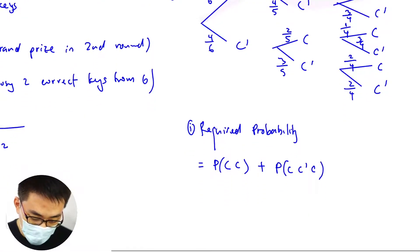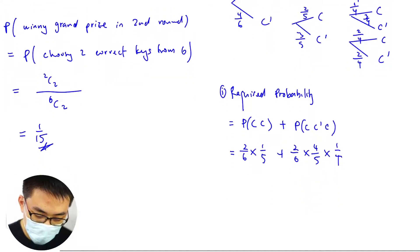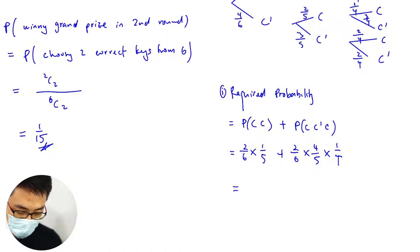So this will be 2 over 6 times 1/5 plus 2 over 6 times 4 over 5 times 1/4. So it's 2 over 6/5 plus 2/5.